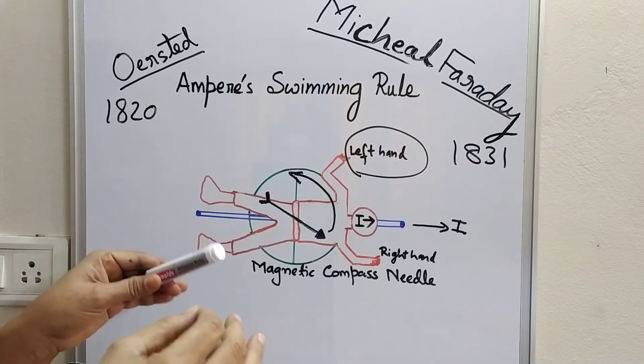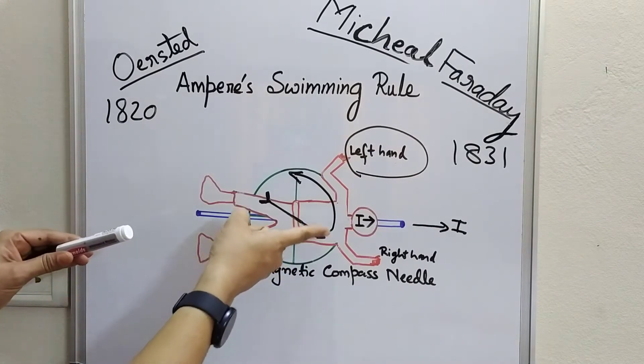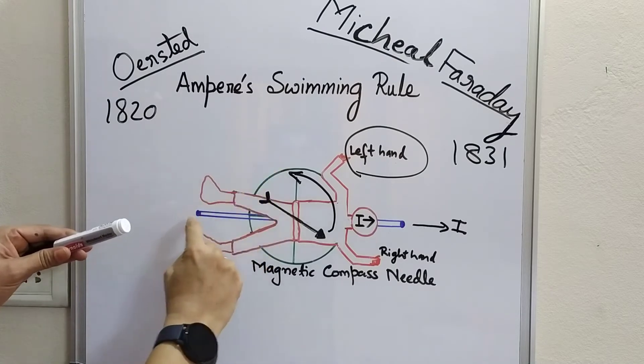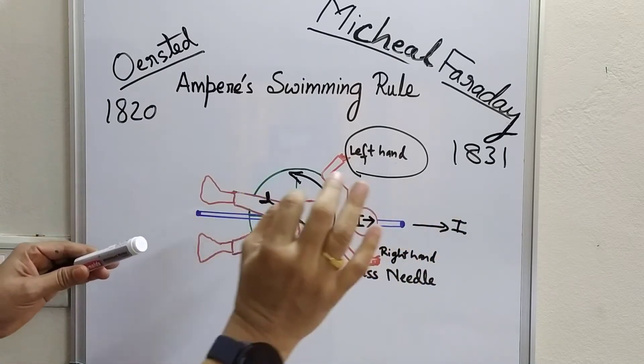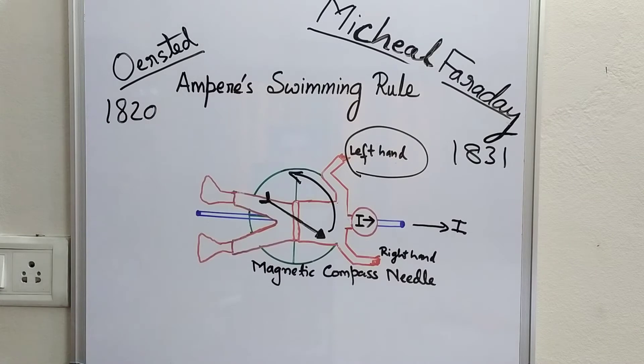The objective of Ampere's swimming rule is to determine the direction of the magnetic field when the direction of electric current in a conductor is known.